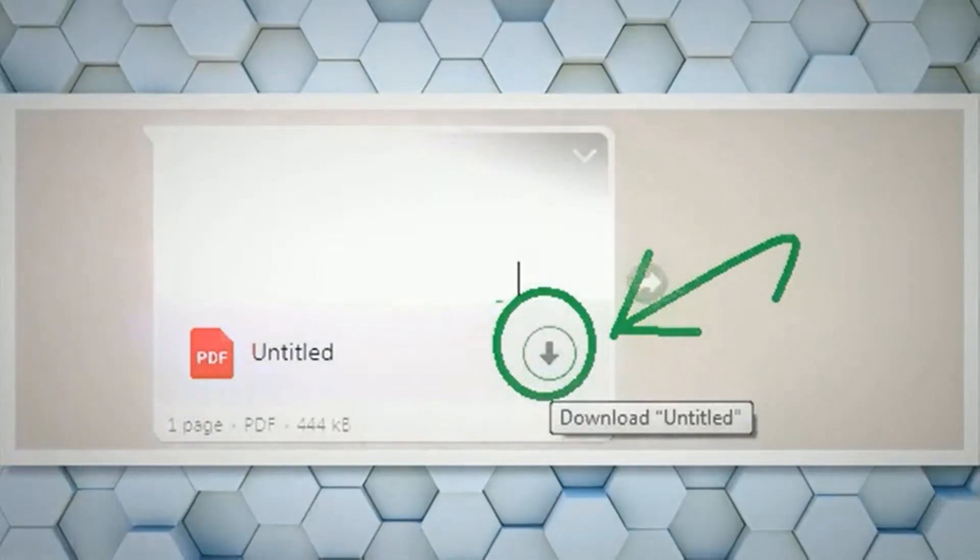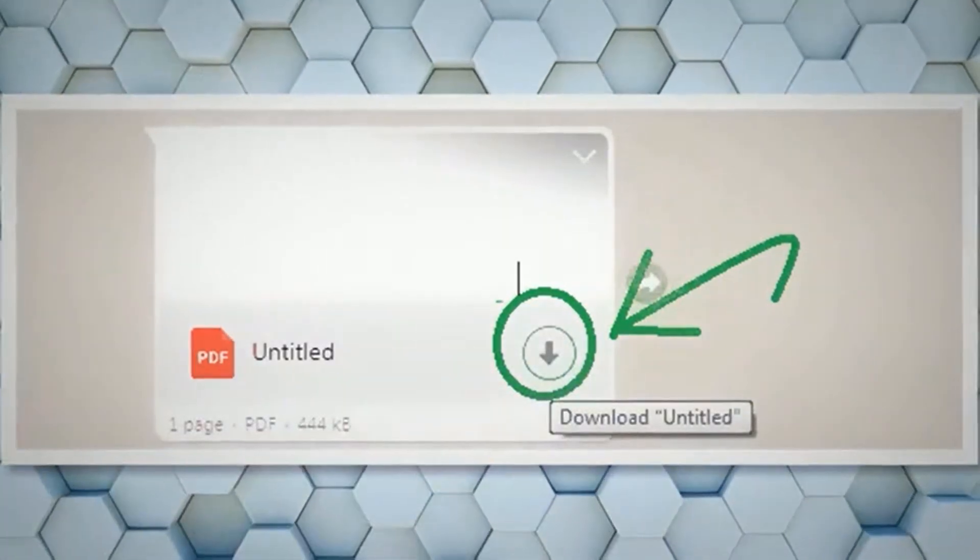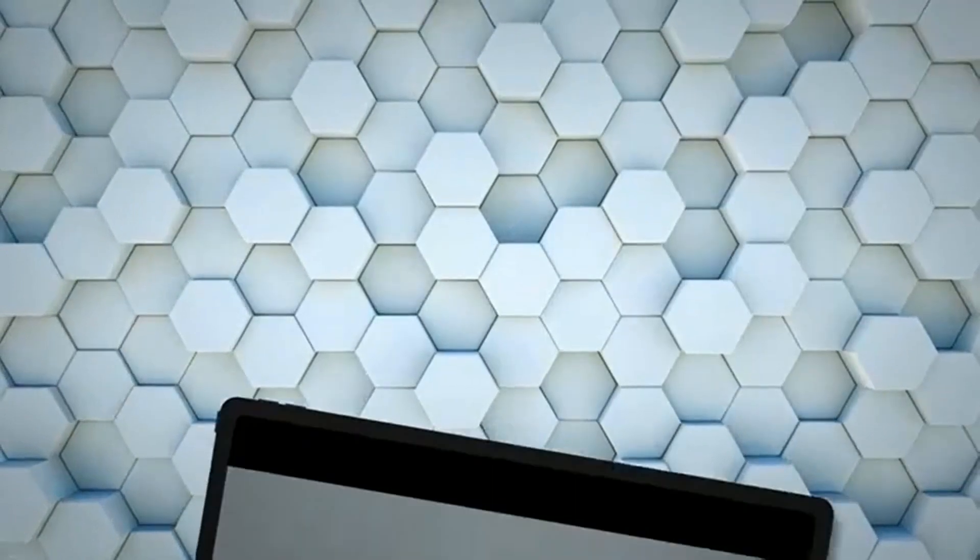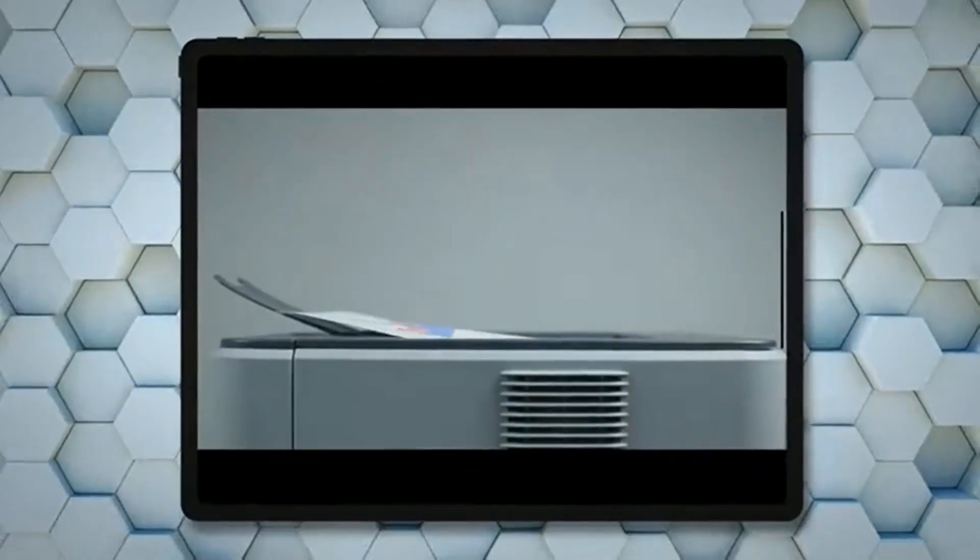Point your phone's camera towards the QR code that is displayed on your computer screen. Now you will see that all your chats appear on your computer.